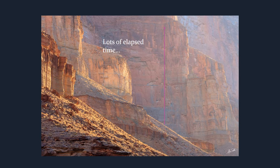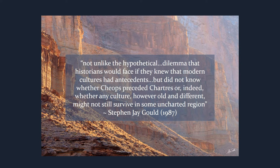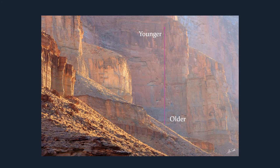By the end of the 18th century it was widely appreciated that the Earth was ancient — far more ancient than the few thousand years accorded to it by biblical literalists. But scientists remained without a strategy for ordering its scattered pages and chapters, rock bodies, into a coherent geohistory. In this they faced a situation not unlike historians who knew that modern cultures had antecedents but did not know whether Cheops preceded Chartres. While it was simple to infer that rocks near the bottom of the pile were older, geologists lacked a reliable way of comparing the ages of widely separated rocks.